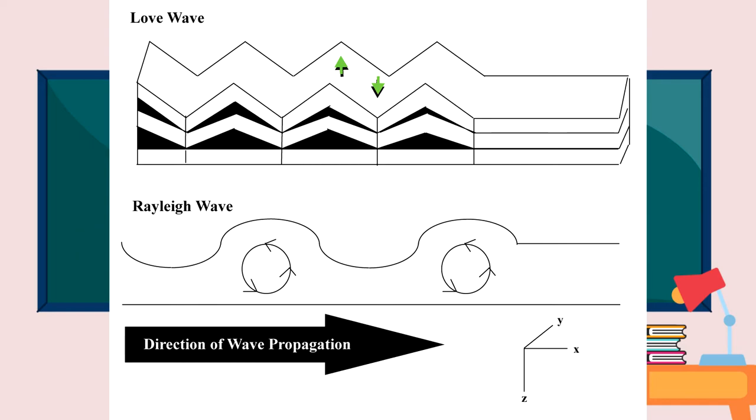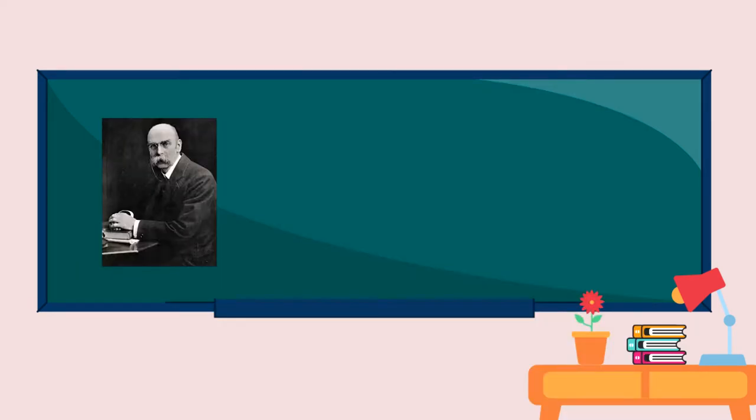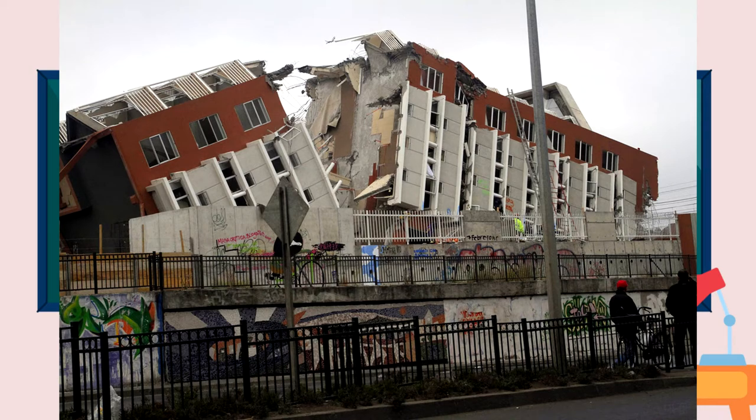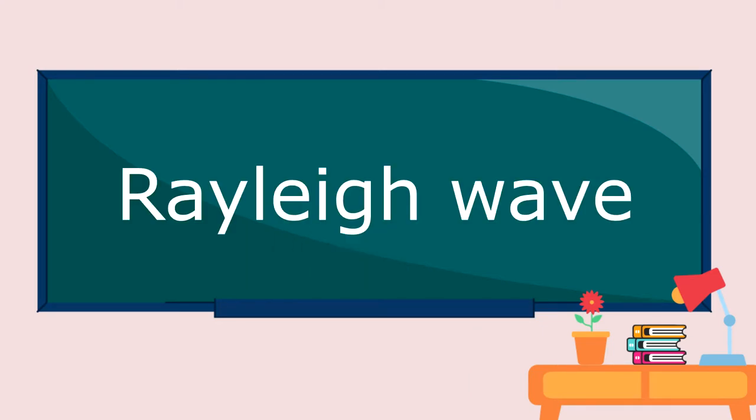Let us give the difference between the two types of surface wave. Love wave is faster than Rayleigh wave. It is named after Augustus Edward Hough Love, a British mathematician. A love wave is a surface wave having a side-to-side horizontal motion. During an earthquake, love waves cause the most damage to structures.